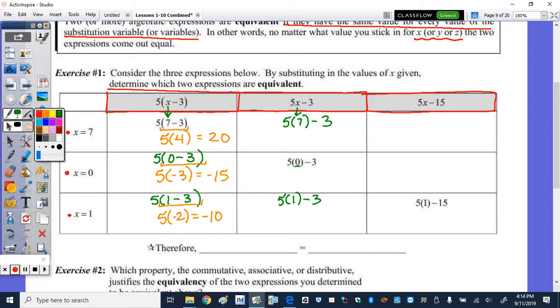So now with the order of operations, when we have multiplication and subtraction, we do the multiplication first. So 5 times 7 is 35. And 35 minus 3 is 32. The next one, 5 times 0 is 0. And 0 minus 3 is negative 3.